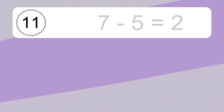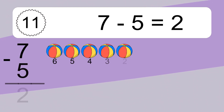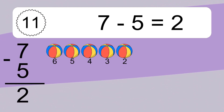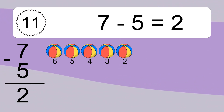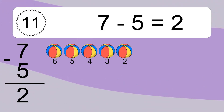7 minus 5 equals what? 7 minus 5 equals 2. Let's count it. 6, 5, 4, 3, 2.